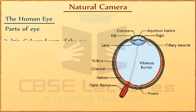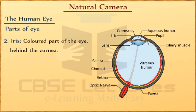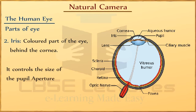Second, Iris. It is the colored part of the eye, behind the cornea. It is a flat, colored, ring-shaped membrane. It controls the size of the pupil aperture.